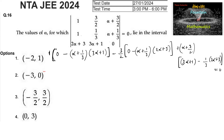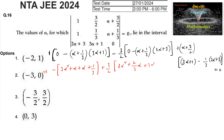Let us simplify. We get minus of (3α² + α + α + 1/3) minus of minus plus 3/2 times of (2α² + 2/3·α + 3α + 1) plus (α+3/2) times (3α+1 − 2/3·α − 1). We can cancel the 1 and minus 1, and the expression equals 0.